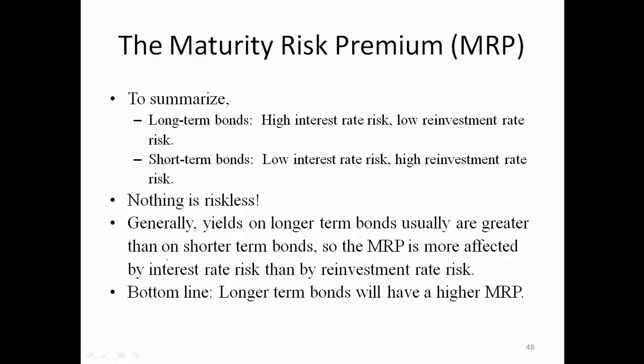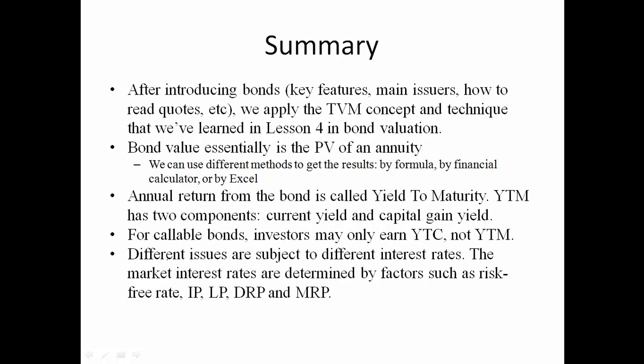To summarize bond valuation: we applied time value of money concepts to bond valuation, where bond value is essentially the present value of an annuity calculable via formula, financial calculator, or Excel. Annual return is the yield to maturity, comprising current yield and capital gain yield. For callable bonds, investors may earn only yield to call. Market interest rates are determined by the risk-free rate, inflation premium, liquidity premium, default risk premium, and maturity risk premium. We now move on to stock and stock valuation.